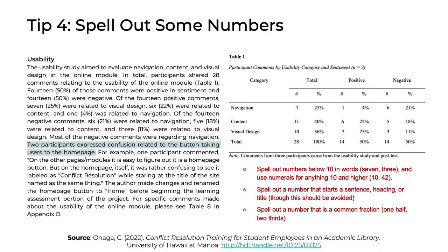Tip 4 is to spell out some numbers in your narrative. According to APA, whenever you start a sentence with a number, that number should be spelled out. As you can see in the highlighted example: 'Two participants expressed confusion related to the button taking users to the homepage.' Notice that 2 is spelled out because it starts a sentence. Other times you should spell out numbers is when they are less than 10. You can use numerals for anything higher, and you should also spell out numbers in headings or subheadings, or when writing a common fraction such as one-half or two-thirds.